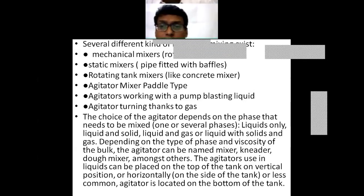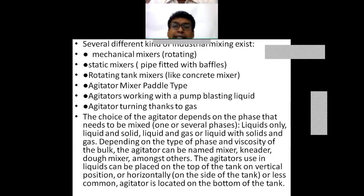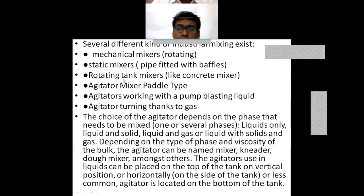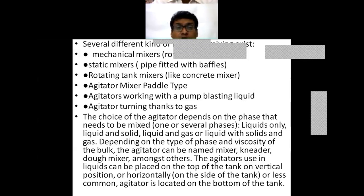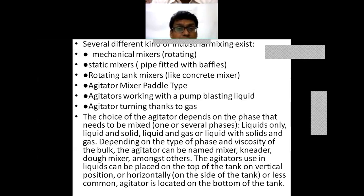Rotating tank mixers are used in applications like concrete generation — for example in concrete road construction. In this type, the tank itself is rotated, which requires a large mechanical assembly. In industrial chemical processes, impeller mixers are generally used, but in civil industry for concrete, the tank is rotated, requiring a huge amount of energy. The choice of agitator depends on the phases involved and physical properties such as viscosity and density.